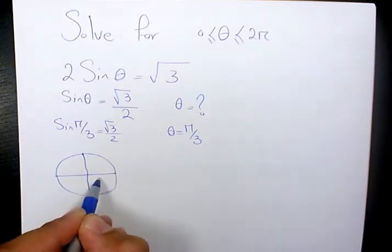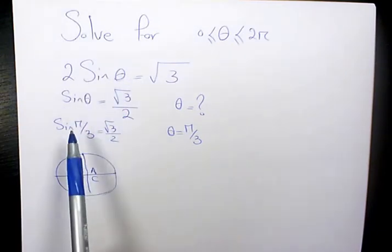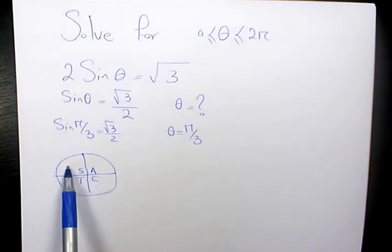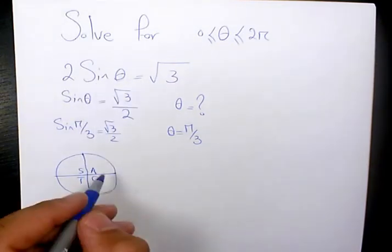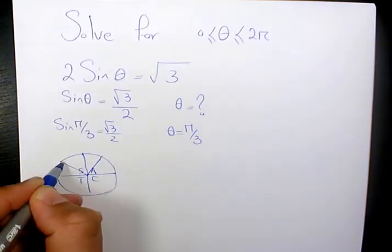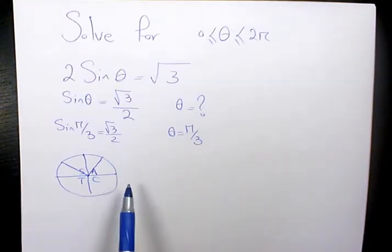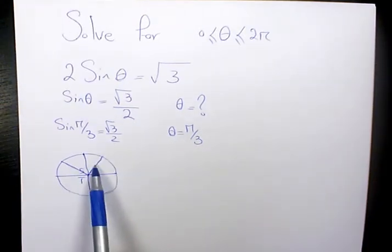For the other answer we need to use the CAST rule. In the CAST rule we know in quadrant 1 and in quadrant 2 the sine values are positive. So one answer is going to be in quadrant 1, one answer is going to be in quadrant 2. We already got the answer in quadrant 1 which is π over 3, but I need to find out the second answer in quadrant 2.